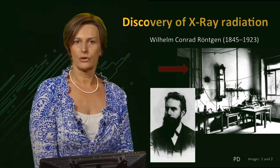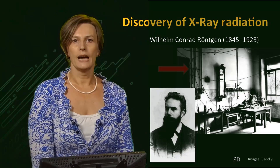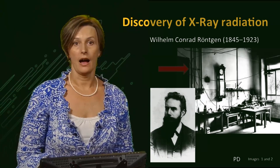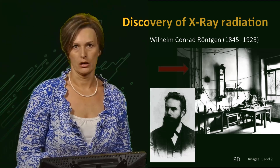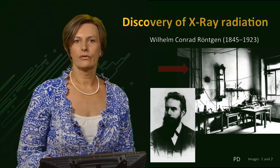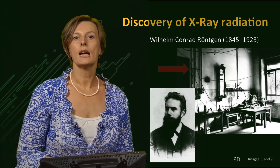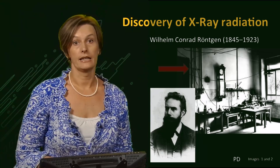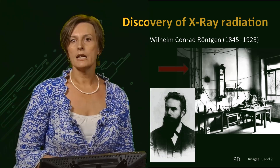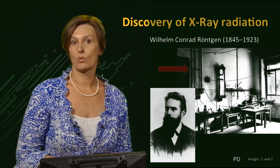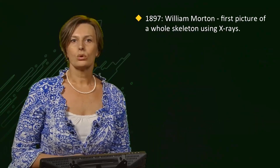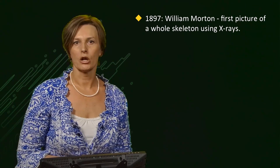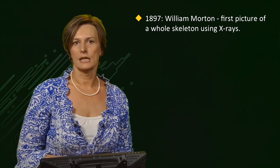The accidental discovery of the radiation known today as X-ray radiation was made in 1895 by the German scientist Wilhelm Konrad Röntgen. He was a professor of physics at the University of Wolfsburg, and here is a photo of his lab where he discovered X-ray radiation. He was awarded the Nobel Prize of Physics in 1901. Two years later, in 1897, William Morton was the first person to take a picture of a whole skeleton using X-ray.